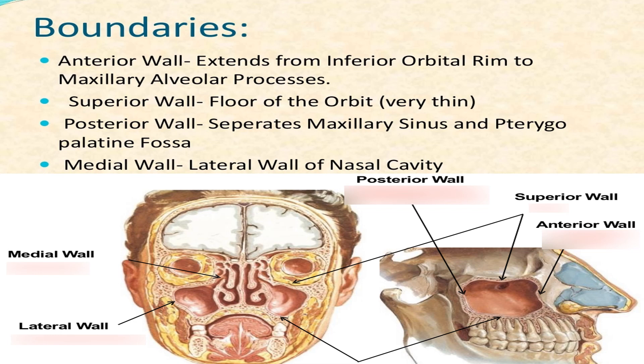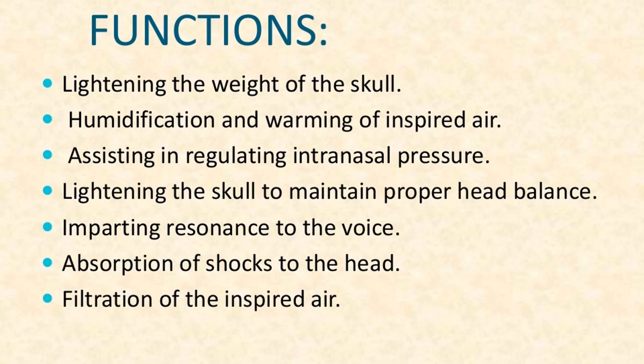Boundaries of the maxillary sinus: the Anterior Wall extends from the Inferior Orbital Rim to the Maxillary Alveolar Processes. The Superior Wall forms the Floor of the Orbit and is very thin. The Posterior Wall separates the Maxillary Sinus from the Pterygoid-Palatine Fossa. The Medial Wall forms the Lateral Wall of the Nasal Cavity.